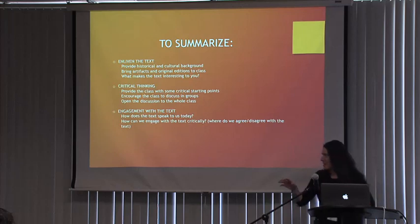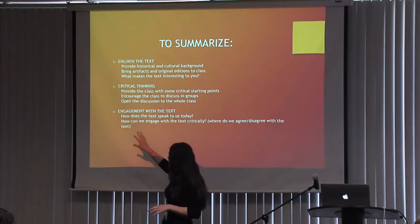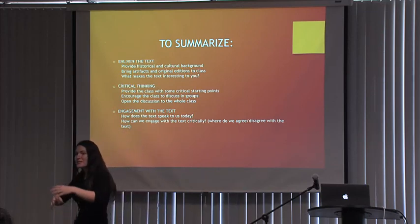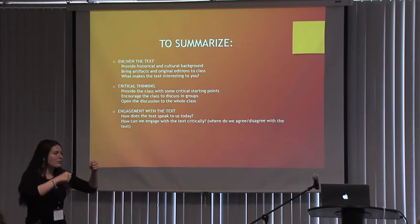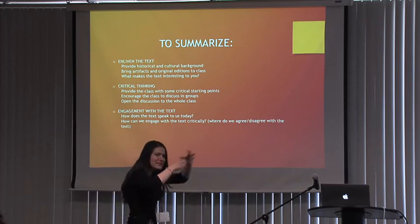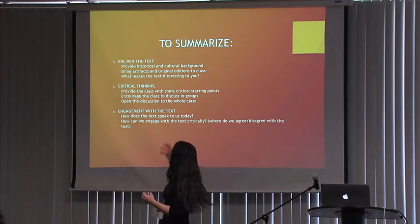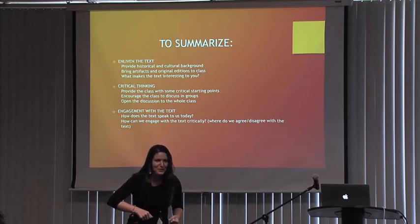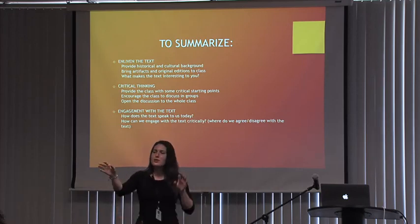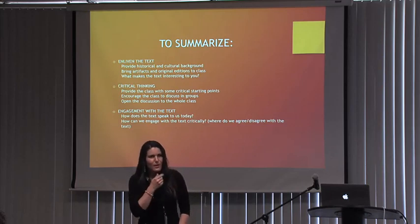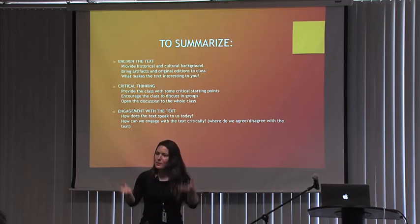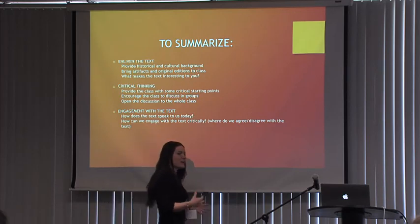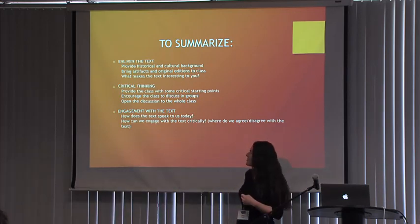Let's summarize what we've said so far. We talked about how to enliven the text: provide a historical background, bring artifacts, bring text to class, read out loud, and prompt critical thinking. I throw a critical question out there, like what about the two ideas of betrayal in the text, and have students discuss it in groups. Then we open it up to the whole class, which usually leads to some very engaging conversations.